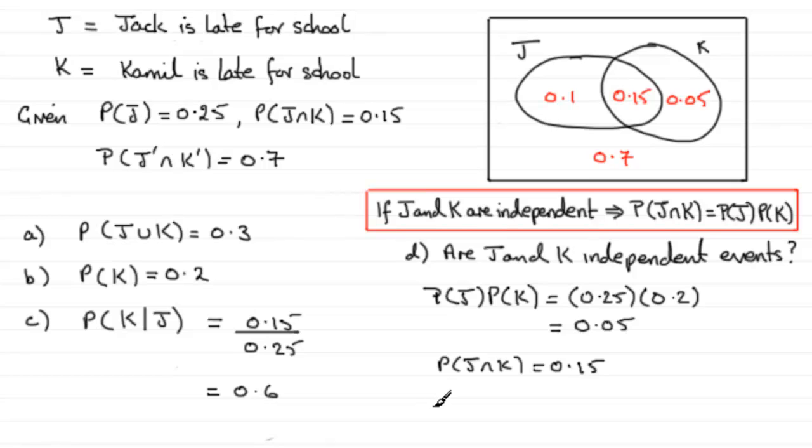So if we were just to say then that since the probability of J intersected with K does not equal the probability of J multiplied by the probability of K, then we can say then J and K are not independent.